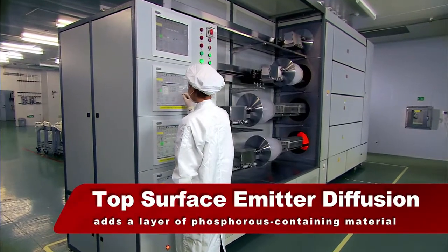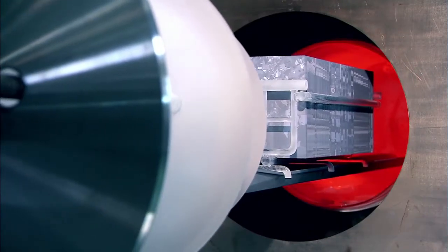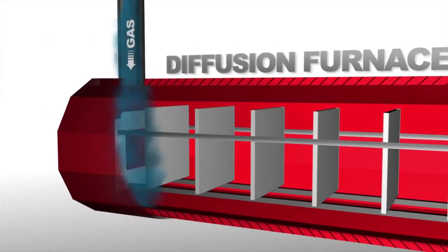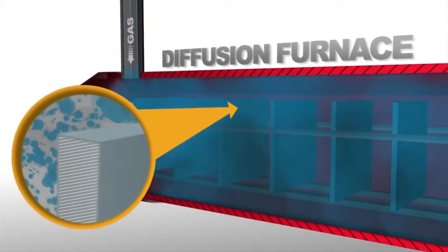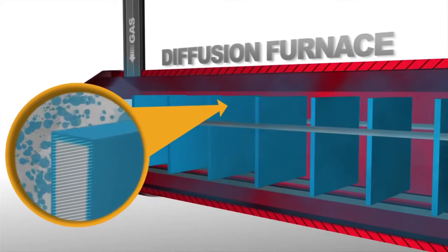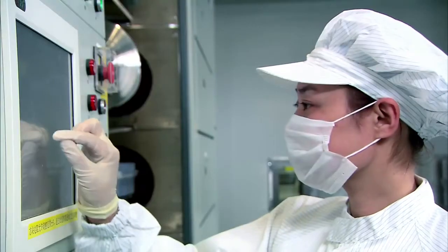Next, the wafers are cleaned thoroughly and placed in a diffusion furnace. Phosphorus source is fed into the furnace via a carrier gas, the generated phosphorus diffusing into the wafer surface at high temperature, forming a P-N junction.